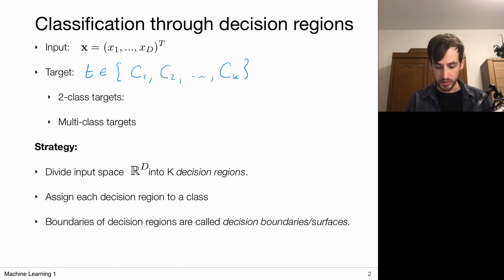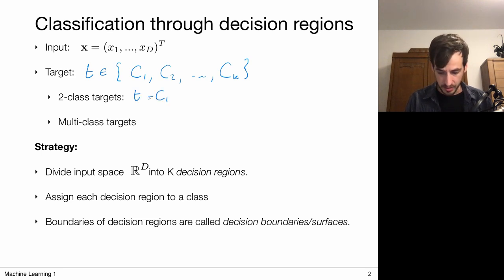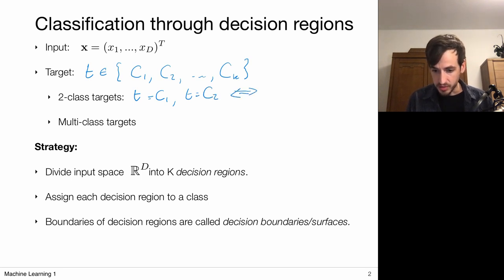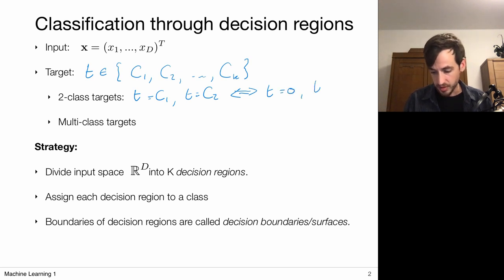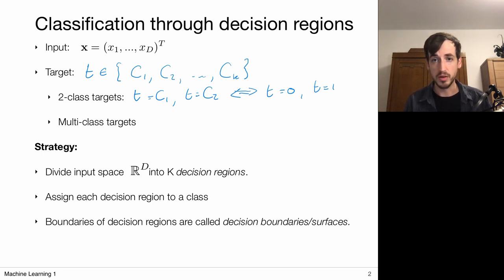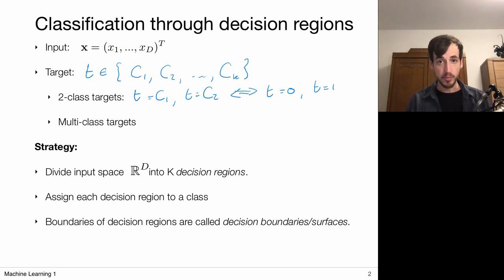We can say something like my target belongs to class one or class two. But equivalently, in the two-class case, we can say my target is either zero or one. So it's binary classification — I have two options, and it's convenient to encode this with a zero and a one.